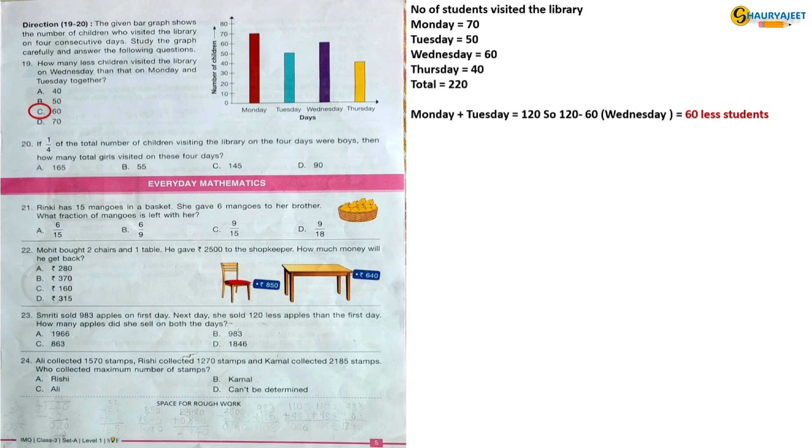Question 20: If one-fourth of total number of children visiting the library on 4 days were boys, then how many total girls visited on these 4 days? One-fourth of 220 is 55, which were boys. Total girls visited: 220 minus 55 is equal to 165 girls. So the correct option is option A, 165.